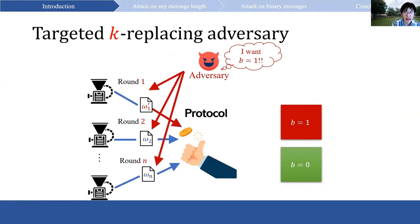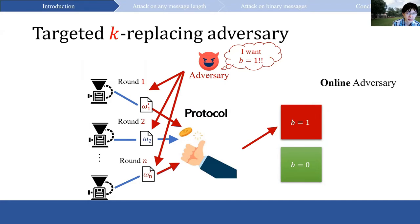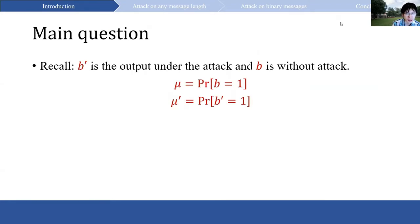Finally, at round n, party n sends out its message, which could depend on all previous messages, and the adversary successfully biases the output b to 1. This is an online adversary, which is the focus of this work. On the contrary, an offline adversary sees all the messages first and then makes changes. Recall that b prime is the output after the adversary. Let mu prime be the probability that b prime equals 1, and mu be the probability that b equals 1.